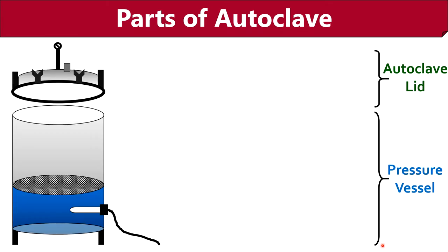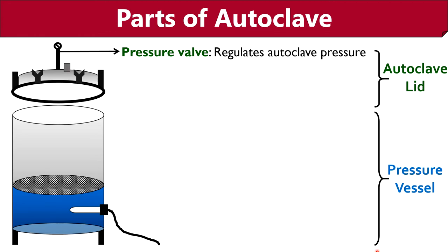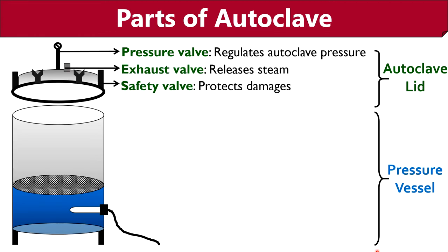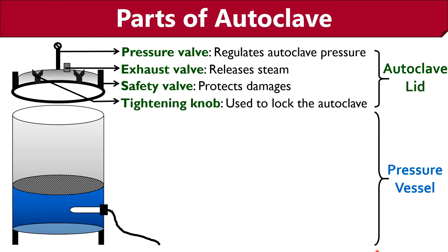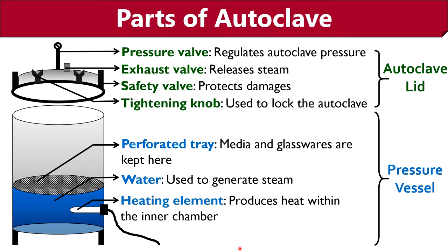Let us discuss the components of the gravity displacement autoclave and the function of each component. An autoclave lid is provided with systems like: a pressure valve that regulates the pressure of the steam jacket and inner chamber; an exhaust valve that releases steam; a safety valve that protects against damages due to overpressure; and tightening knobs used to lock the autoclave and provide a closed system. A pressure vessel contains an inner chamber and an outer jacket composed of stainless steel, and also comprises a perforated holding tray where you can keep the media and glassware. Water is added into the pressure vessel up to the level of the tripod stand, and a power cable is attached to the heating element that is necessary for steam production.